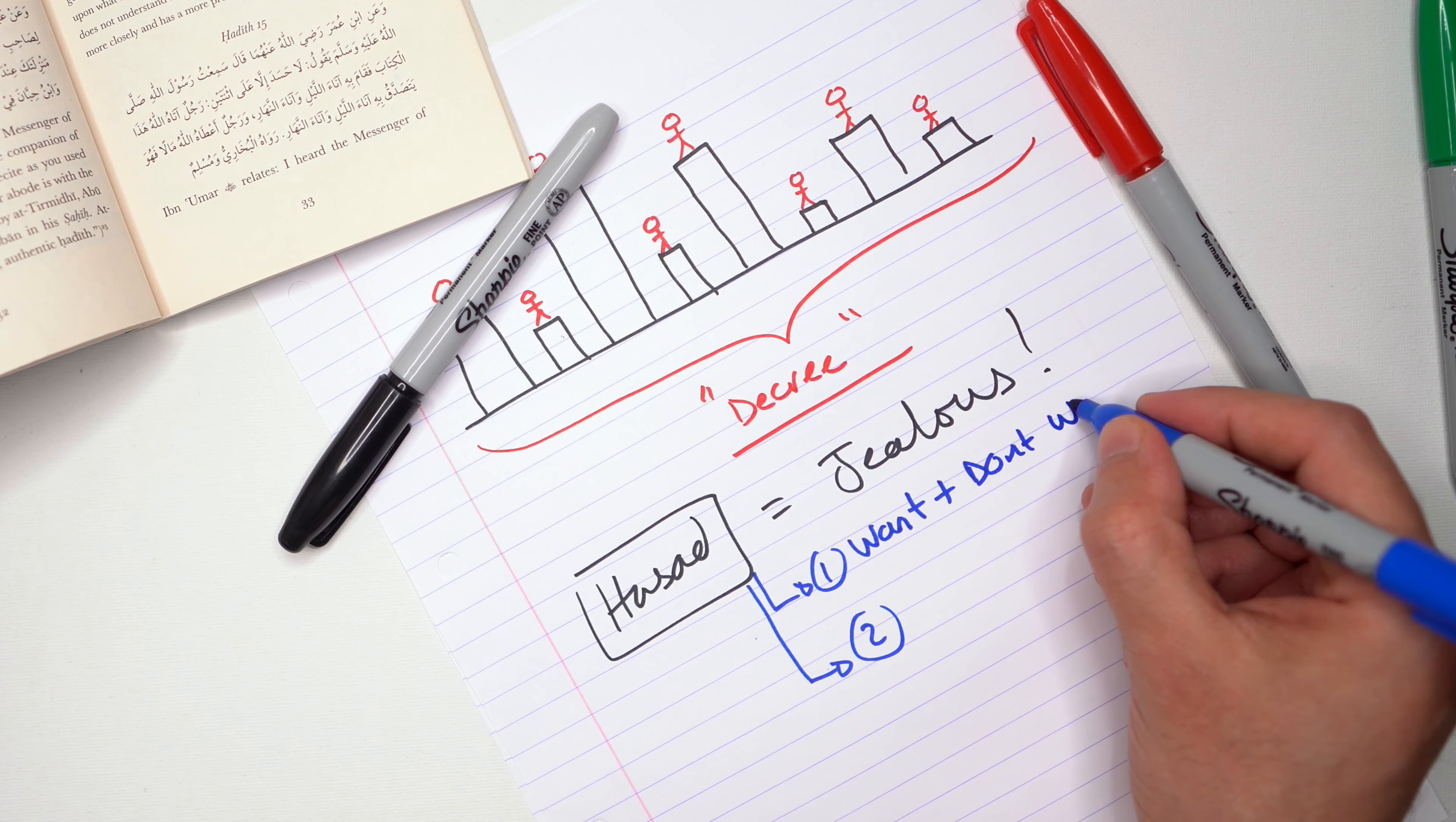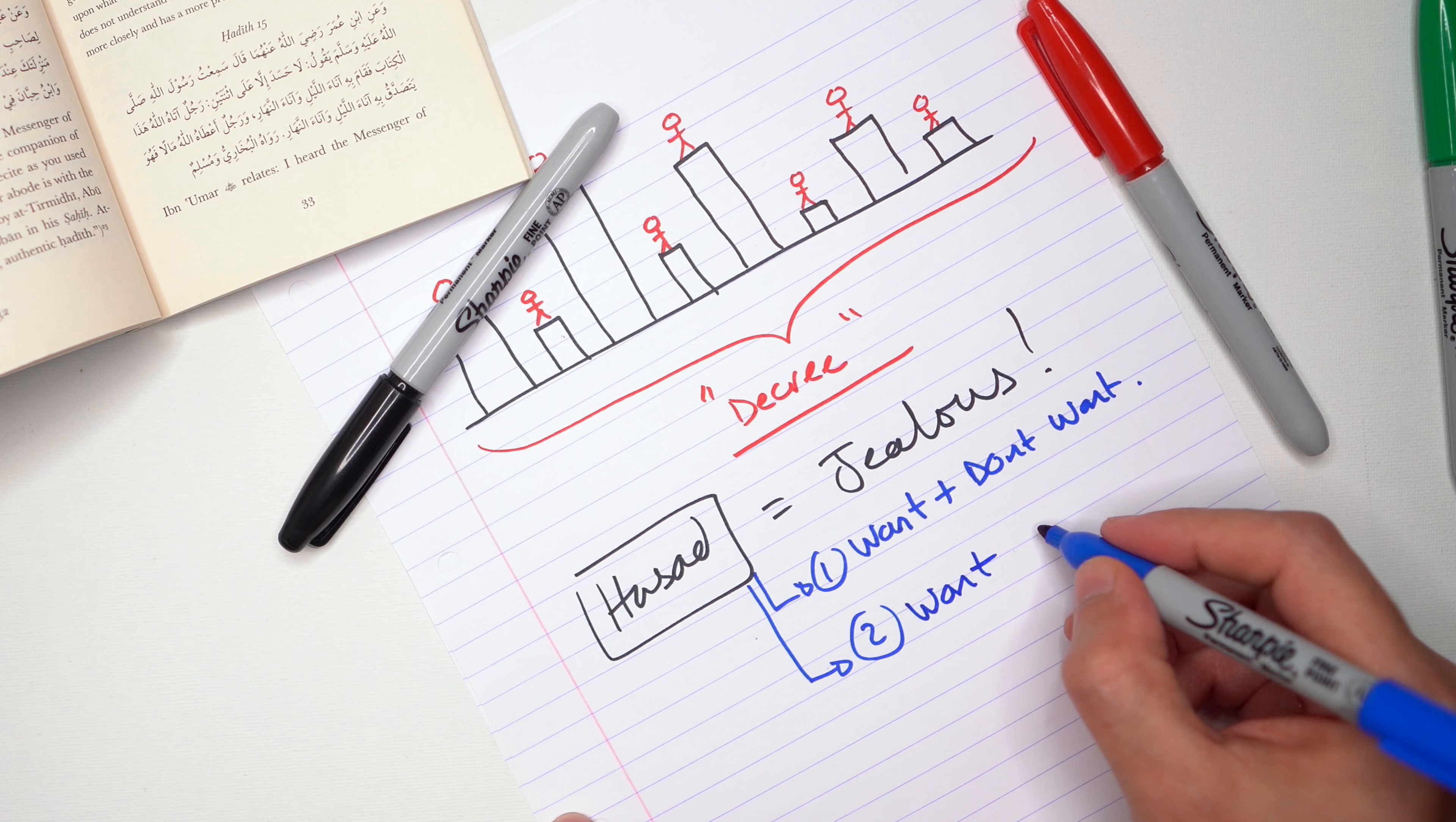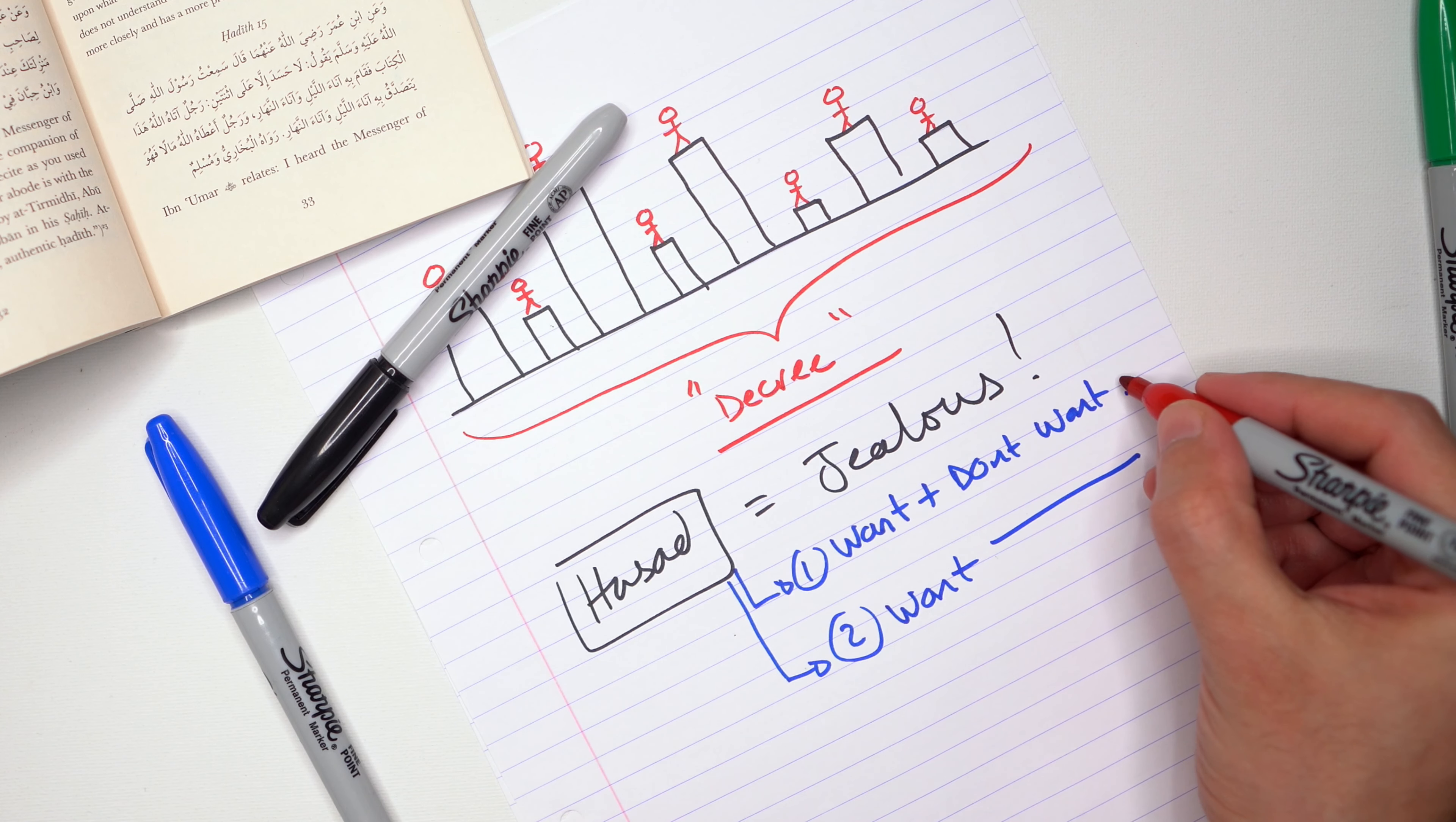Now one of the things that is not allowed for us to do is in Arabic called حَسَد. Hasad is for a person to be jealous. Jealousy is not allowed. What is jealousy? So jealousy is when a person... there's two levels of jealousy. Let me write down two levels of jealousy.